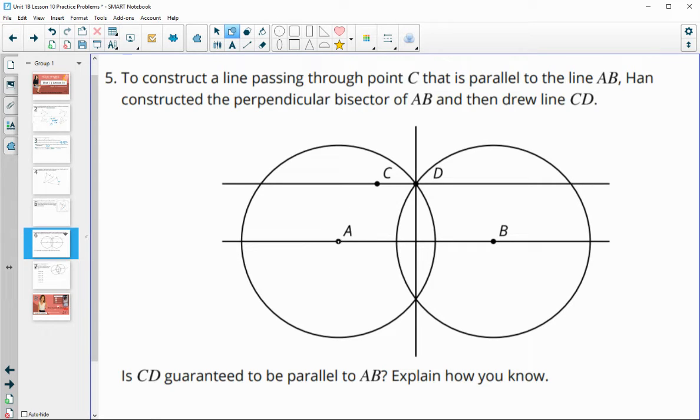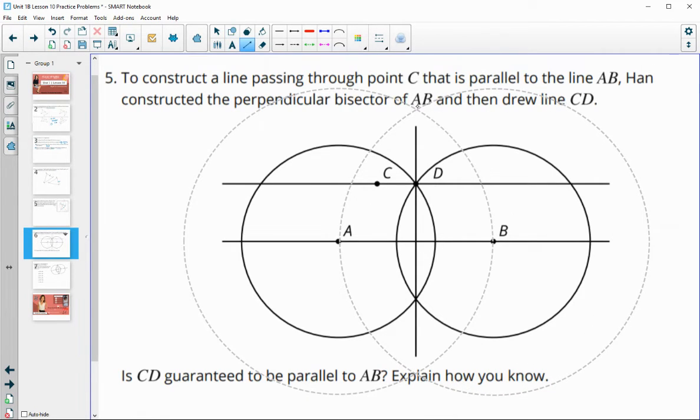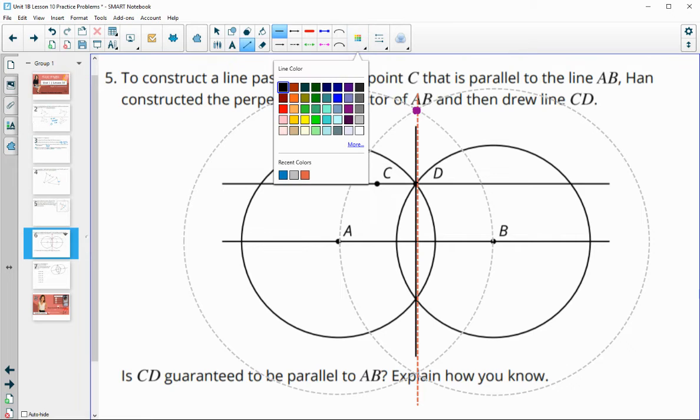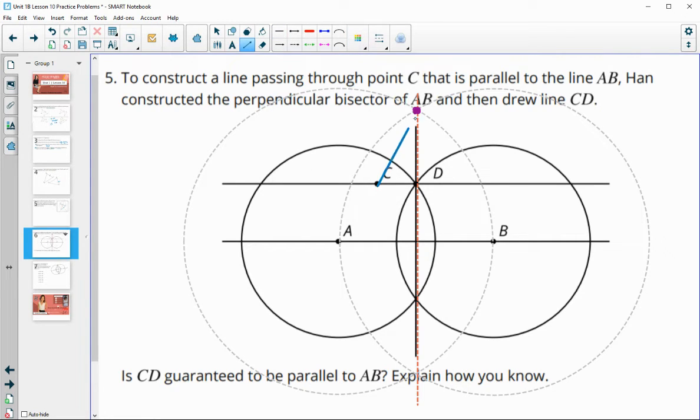He did a perpendicular bisector here where you do two congruent circles. Let me do one that actually goes from A to B and then from B to A. Then we could look at this intersection, which is just where he decided to draw point D. If I just drew point D here and then connected C to D, that's certainly not parallel to AB because D is way up here.